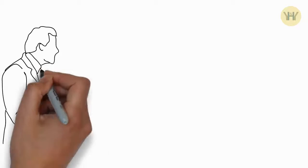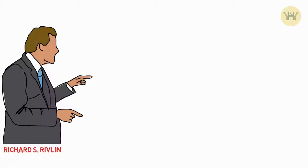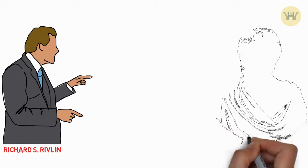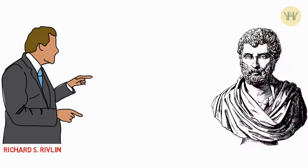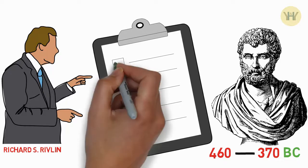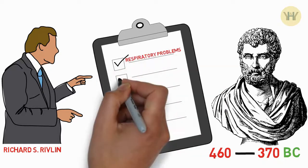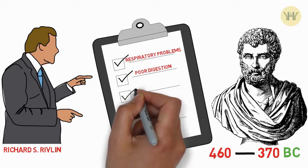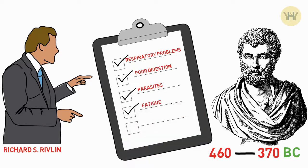This is no wonder Richard S. Rivlin wrote in the Journal of Nutrition that the ancient Greek physician Hippocrates, who lived approximately 460 to 370 BC and known today as the father of Western medicine, prescribed garlic for a series of conditions and illnesses. Hippocrates promoted the use of garlic for treating respiratory problems, poor digestion, parasites, and fatigue.